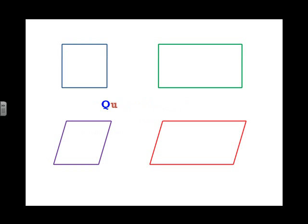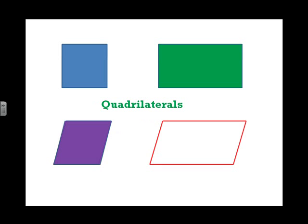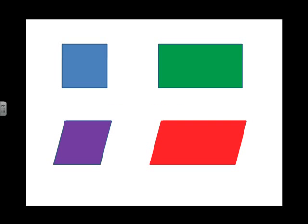These shapes are all called quadrilaterals. I'm sure you're familiar with the blue square, the green rectangle, the purple rhombus, and the pink parallelogram. What makes them a quadrilateral is the fact that they have four sides, regardless of what their shape is.